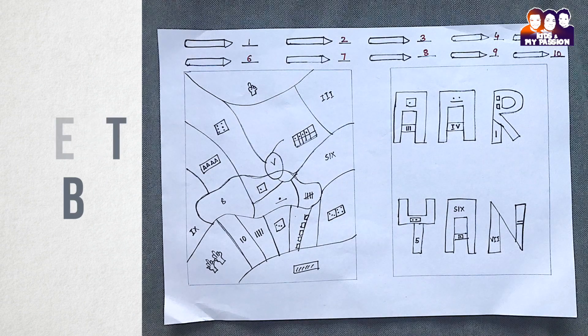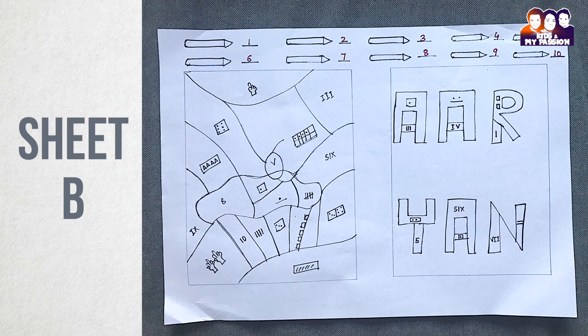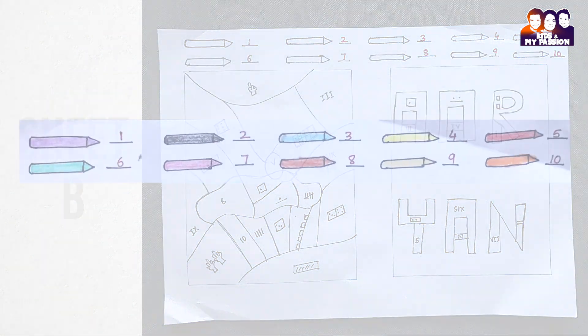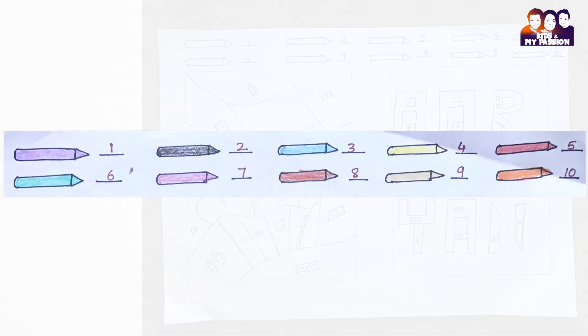Sheet B represents the hands-on activity sheet. You can draw images of your choice. Choose different colors for different numbers from 1 to 10.